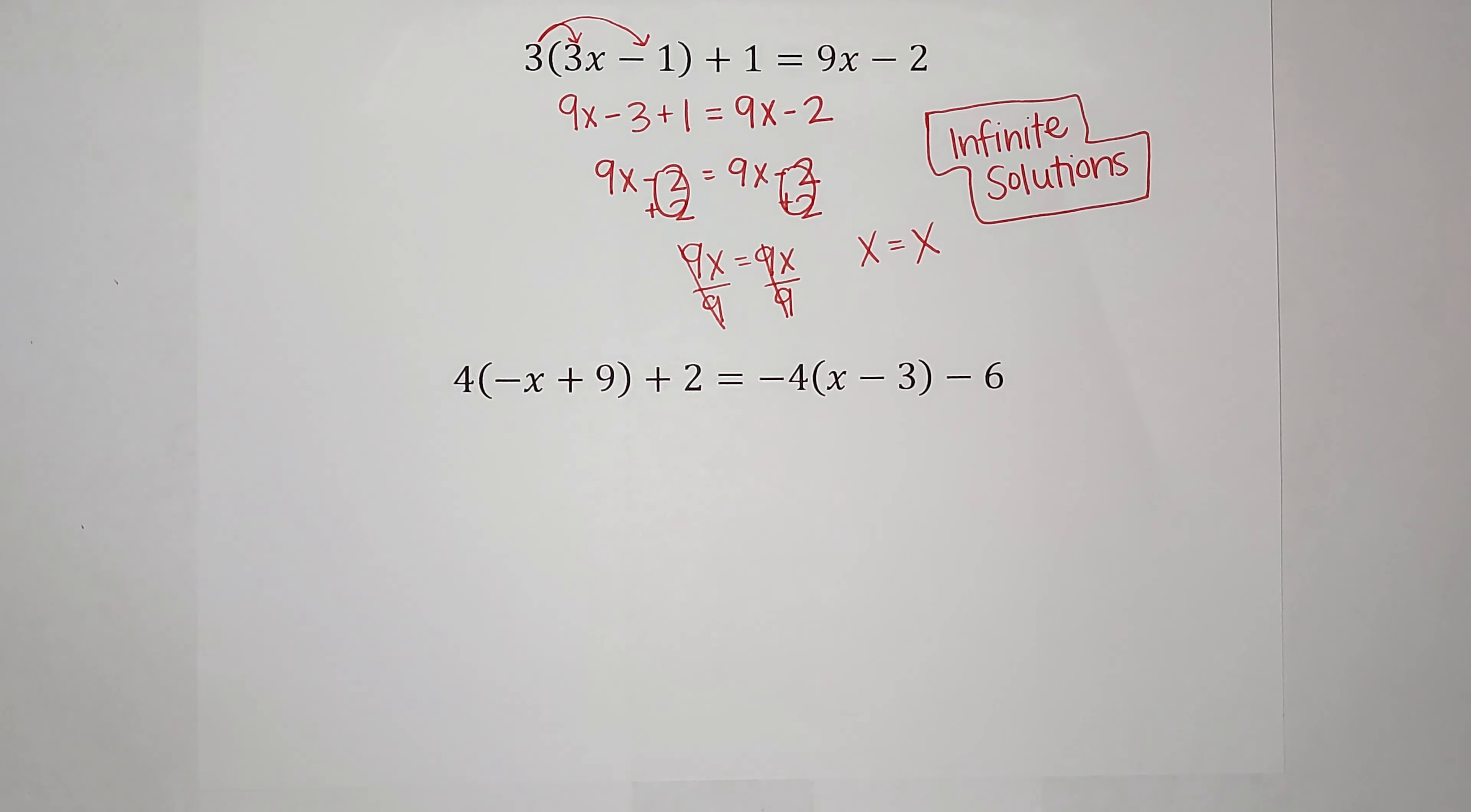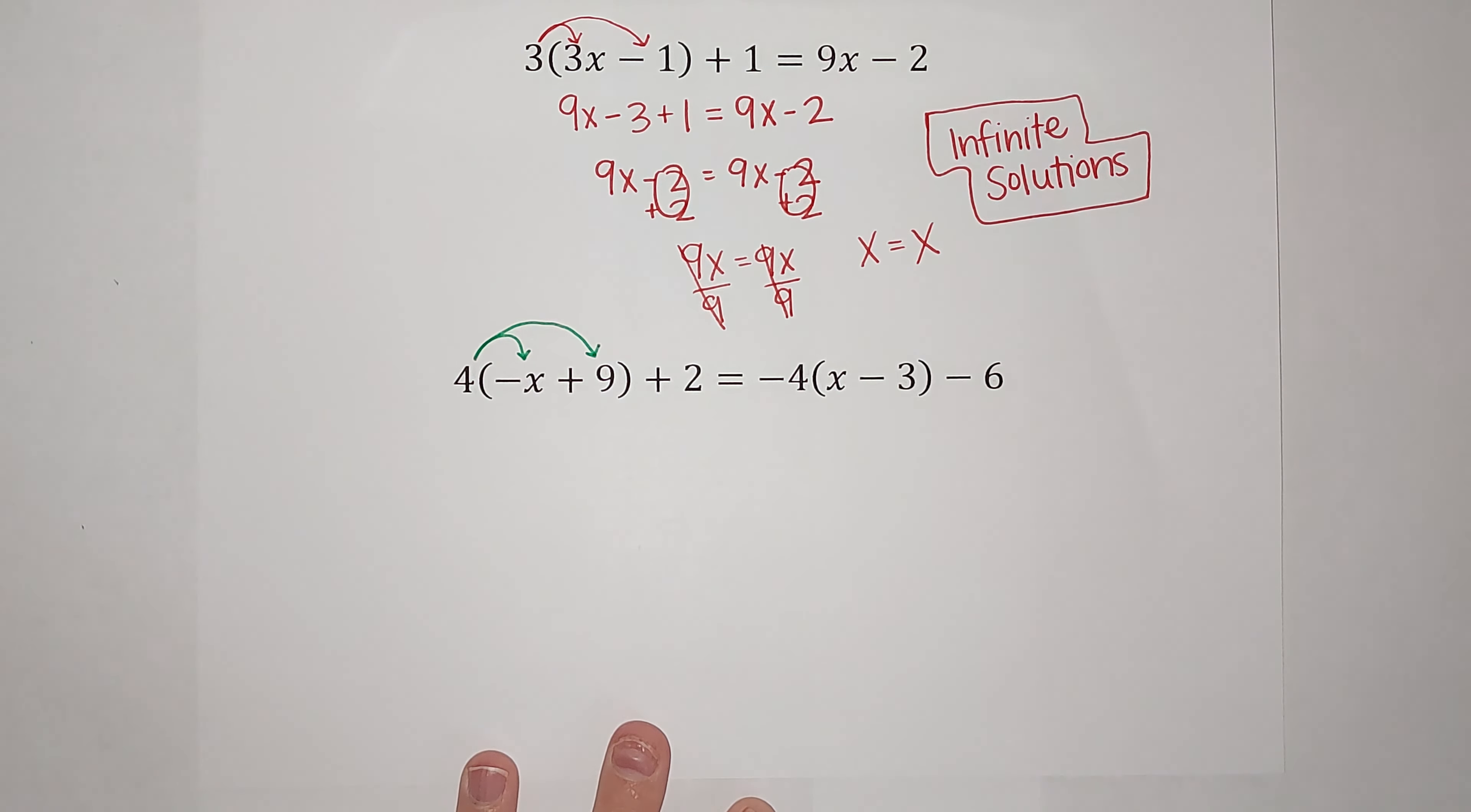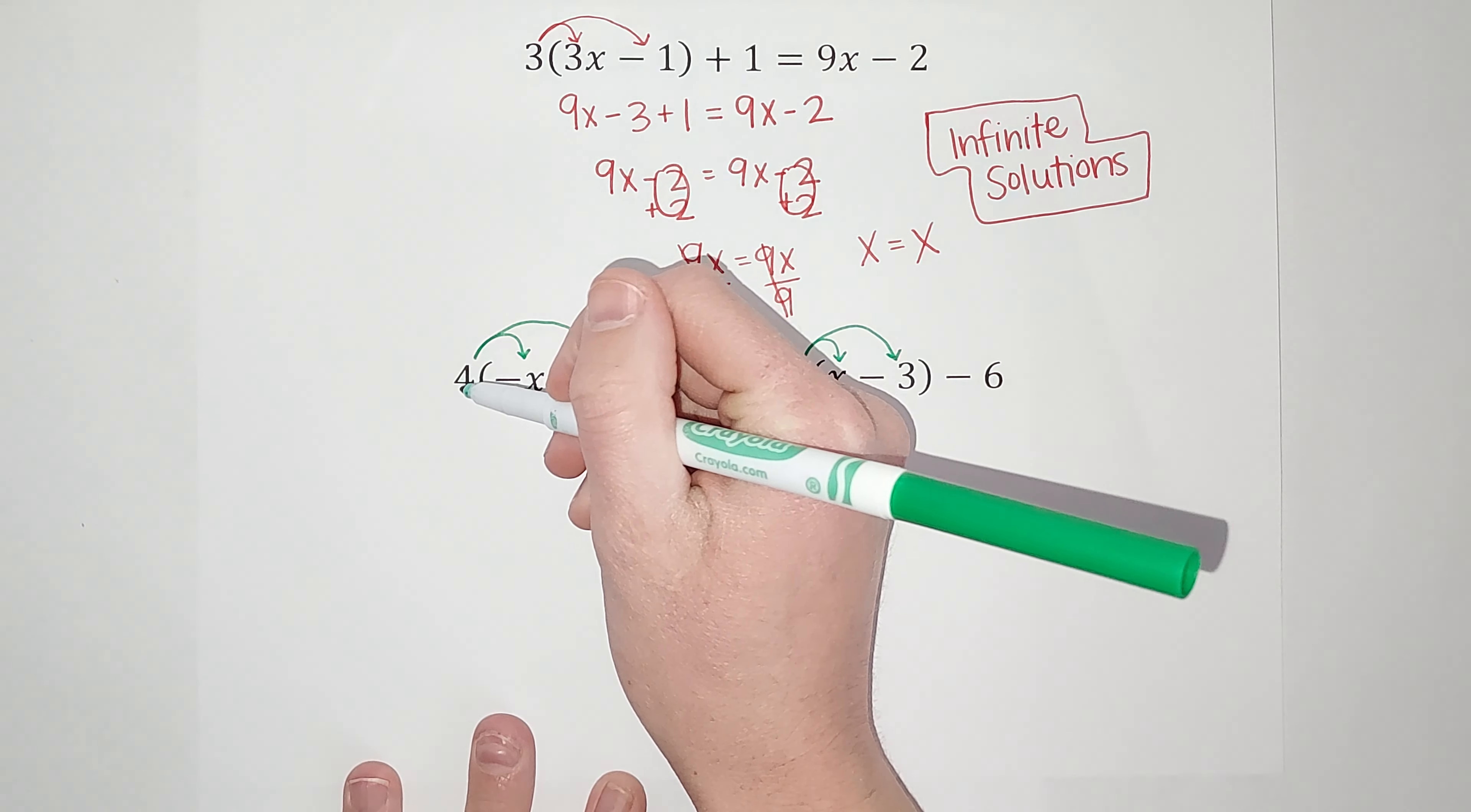So I bet you can guess what the answer to this one's going to be. Well, let's see what happens. So again, I want to get rid of these parentheses. So I am going to distribute the 4 in on that one and the negative 4 in on this one. Oh, guys, I did Christmas colors. I didn't mean to do that.